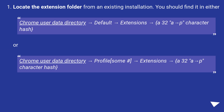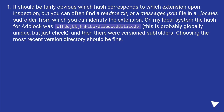Locate the extension folder from an existing installation. You should find it in the Chrome User Data Directory, under Default/Extensions, followed by a 32-character hash. It should be fairly obvious which hash corresponds to which extension upon inspection, but you can often find a readme.txt or a messages.json file in a _locale subfolder, from which you can identify the extension.